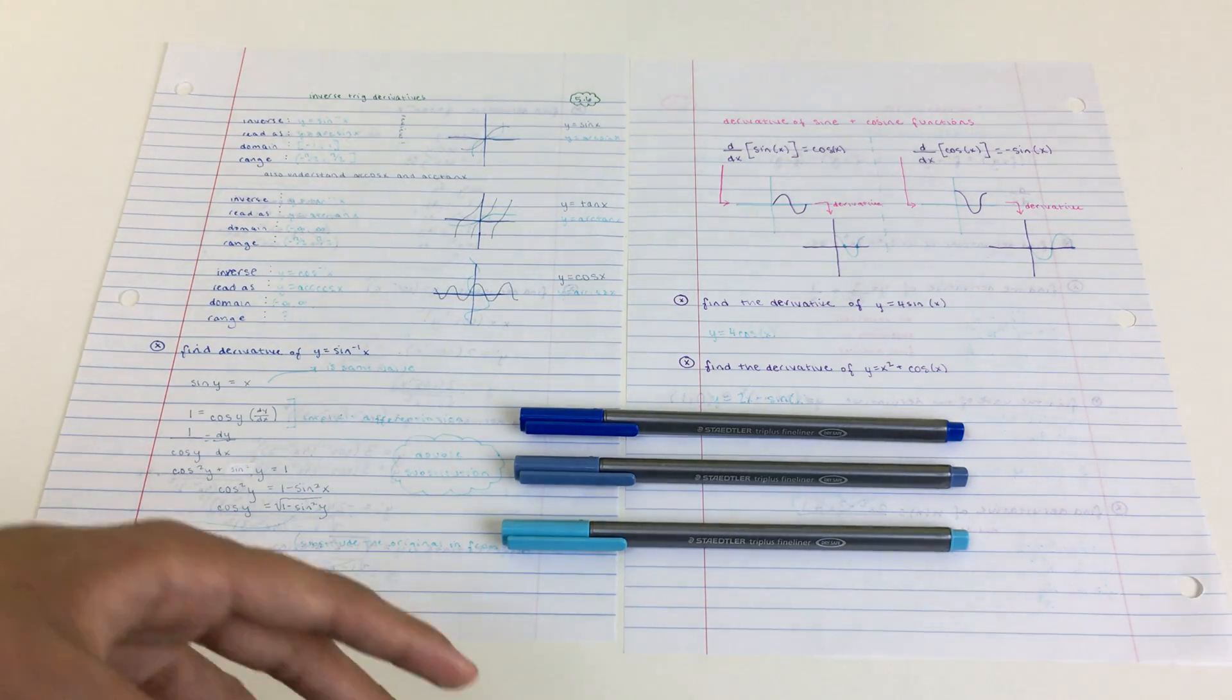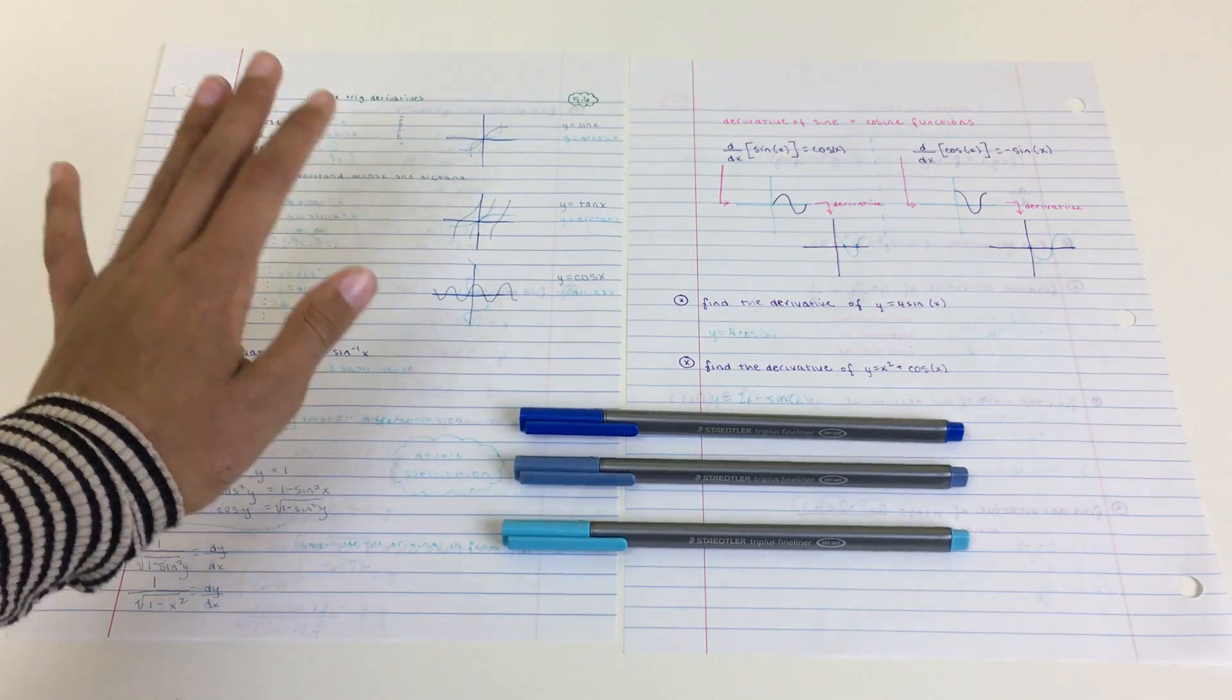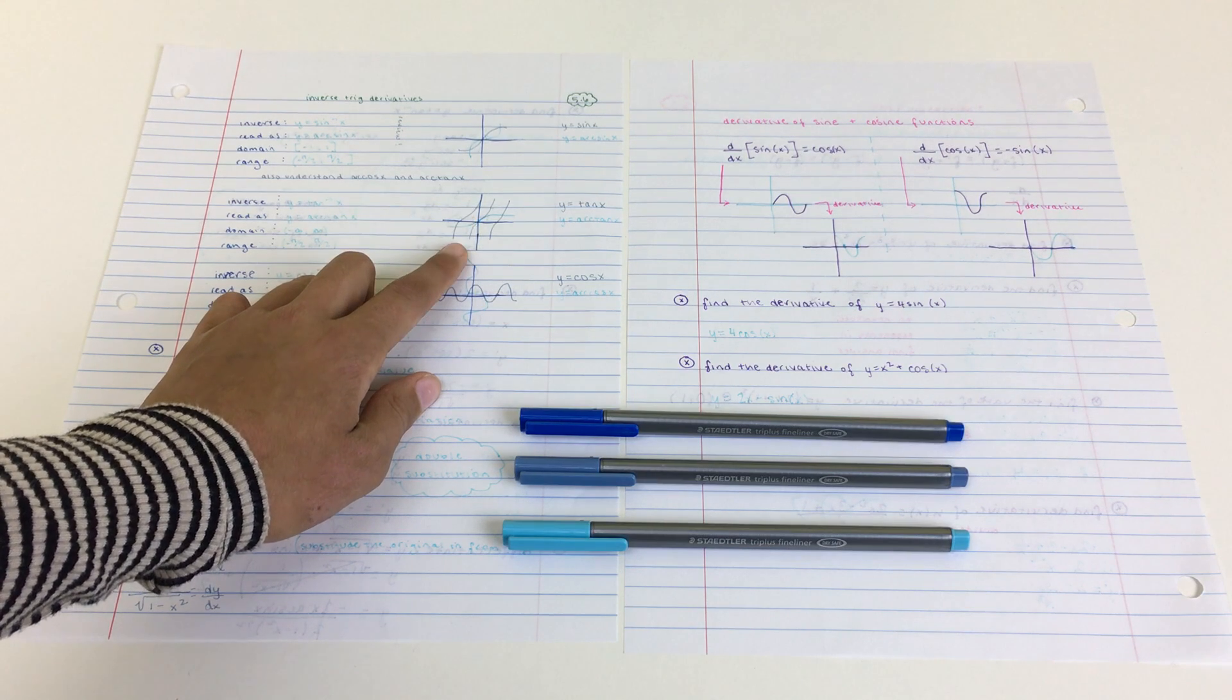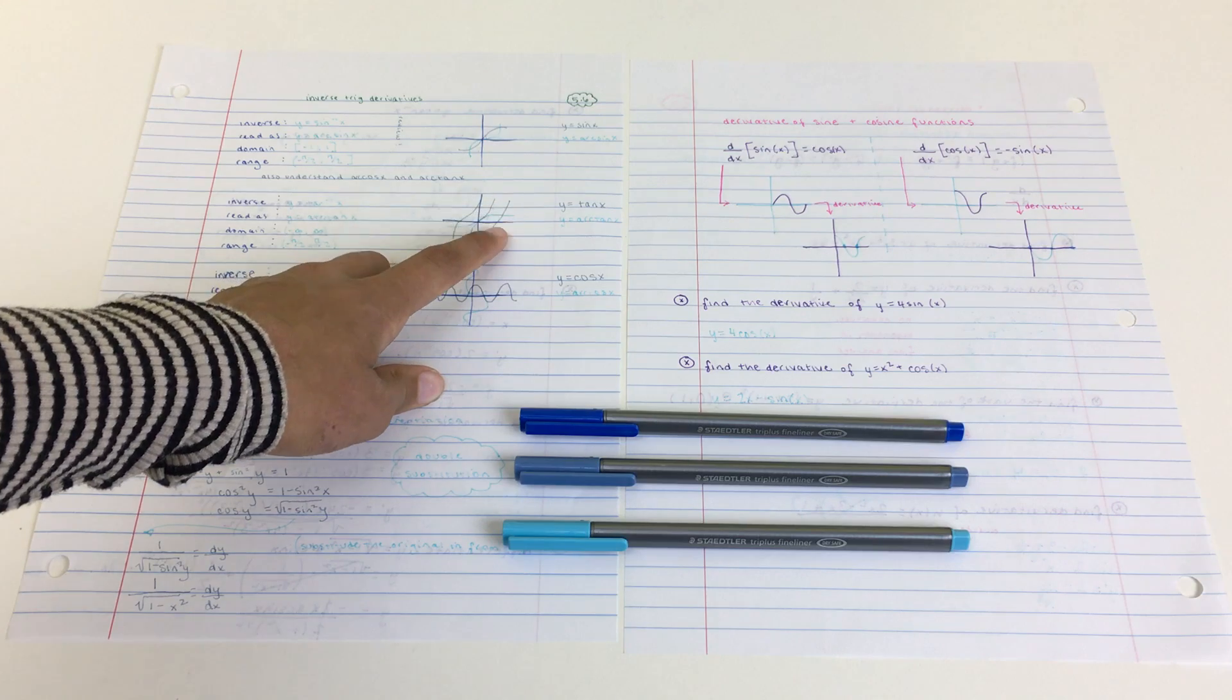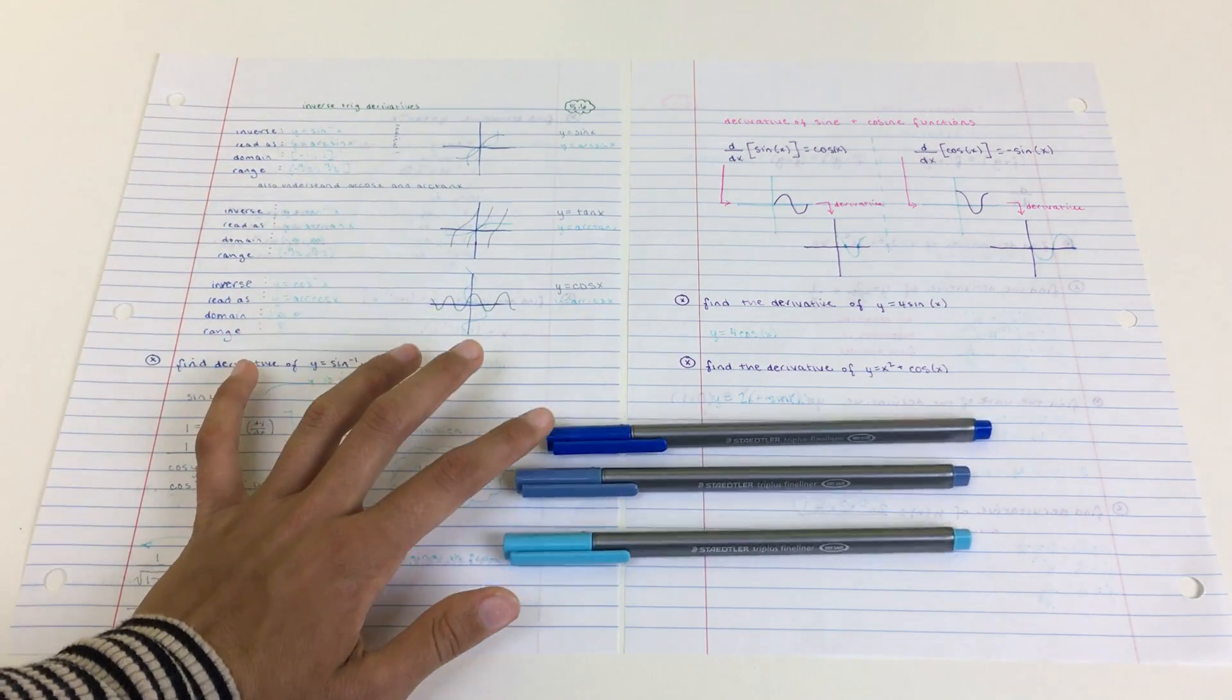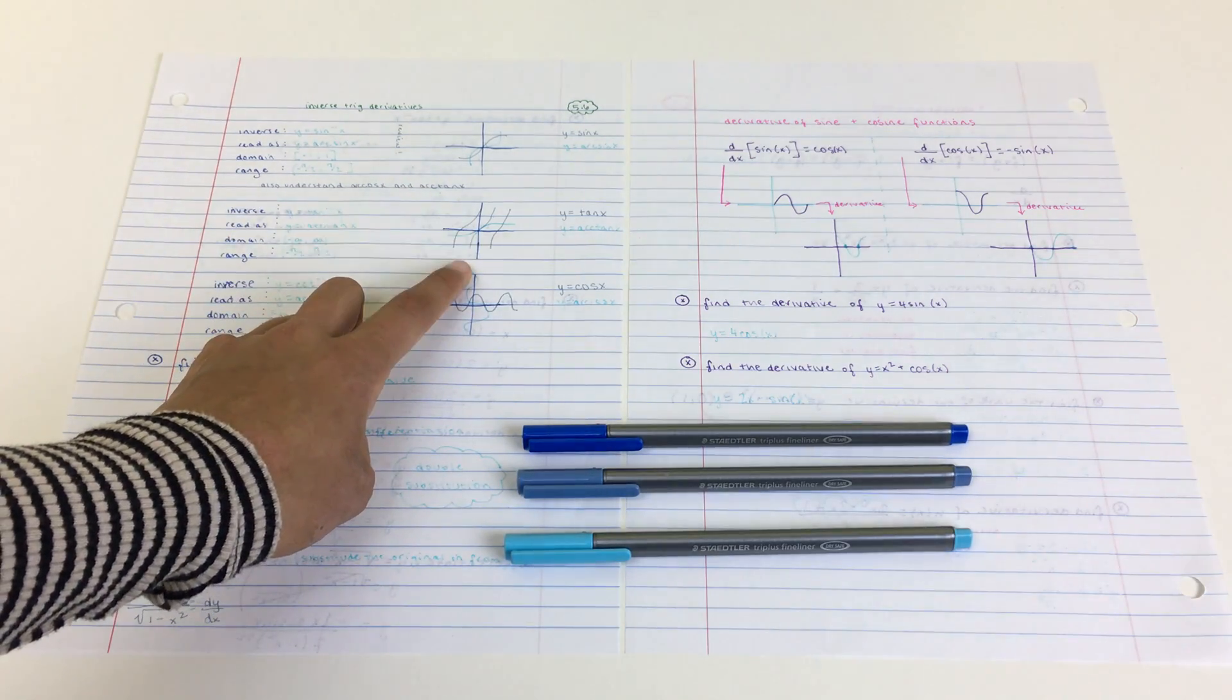And if you ever have to graph more than one function, like doing inverse trig derivatives and things like that, you can take advantage of the fact that you are using more than one color by doing one function in one color and write that corresponding equation towards the margin of the paper, and do the same for the other functions. That way you're able to see both in relation to each other.